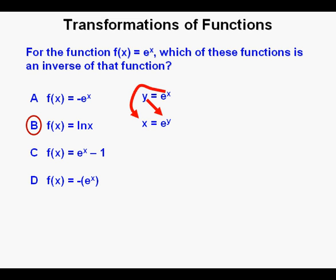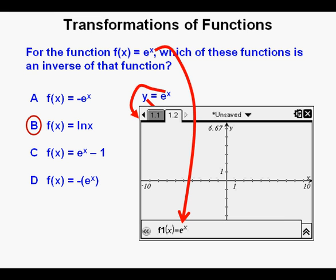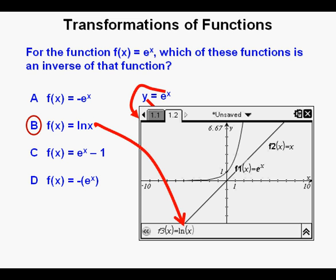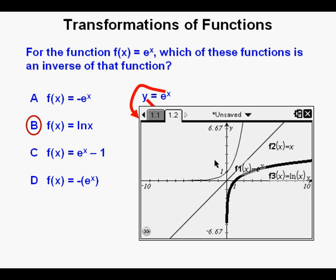Another way is to graph the functions and see which one reflects about the line y equals x. We enter f of x equals e to the x in the calculator and graph it. Then we enter y equals x — the diagonal line going from lower left to upper right. Entering answer b, ln x, and graphing all three together, we see the two functions reflected about the line y equals x, demonstrating they are inverse functions relative to one another.